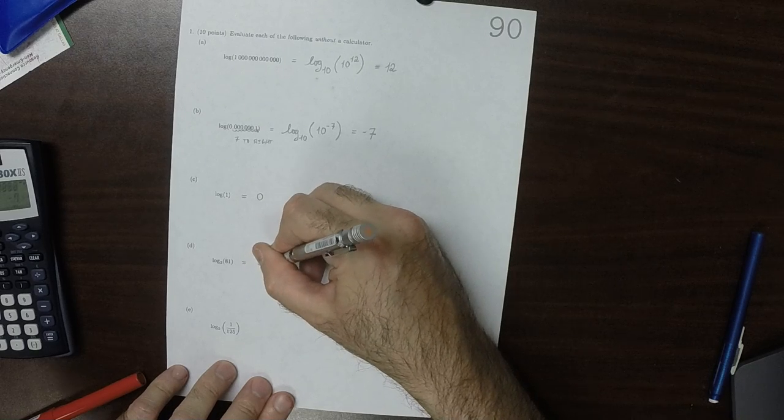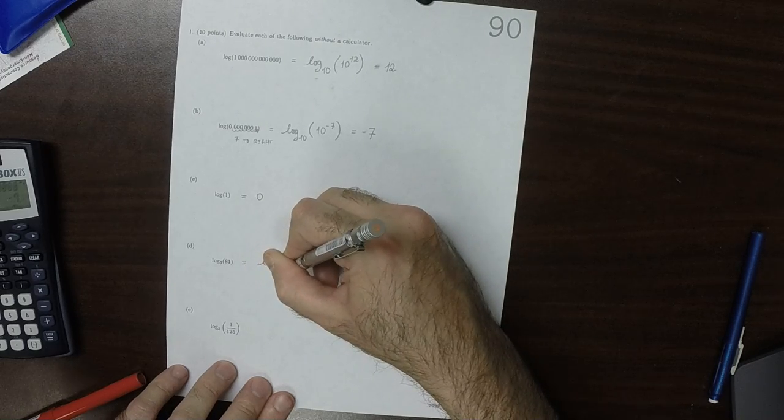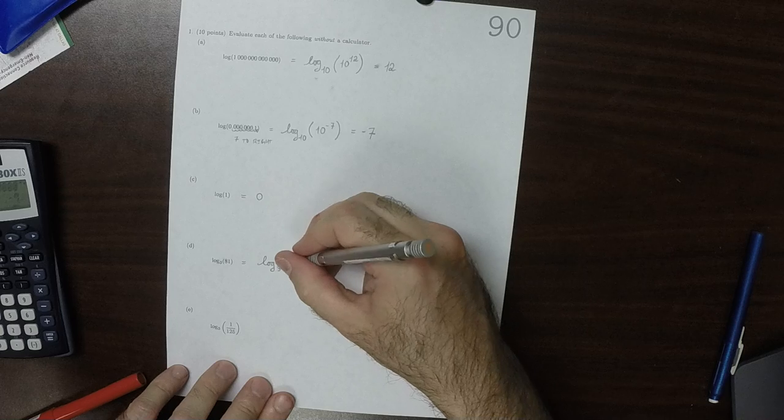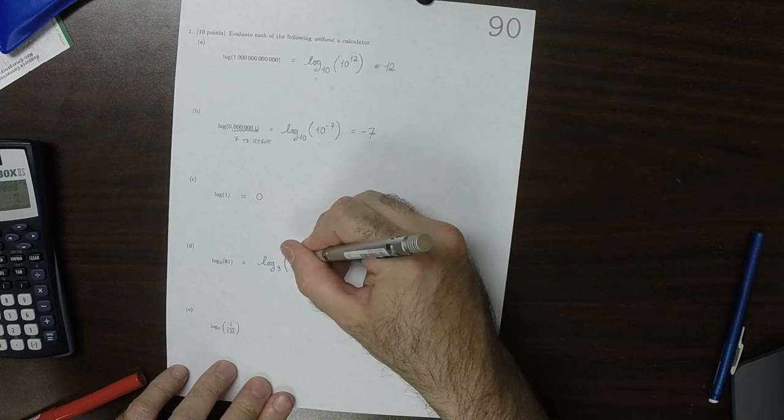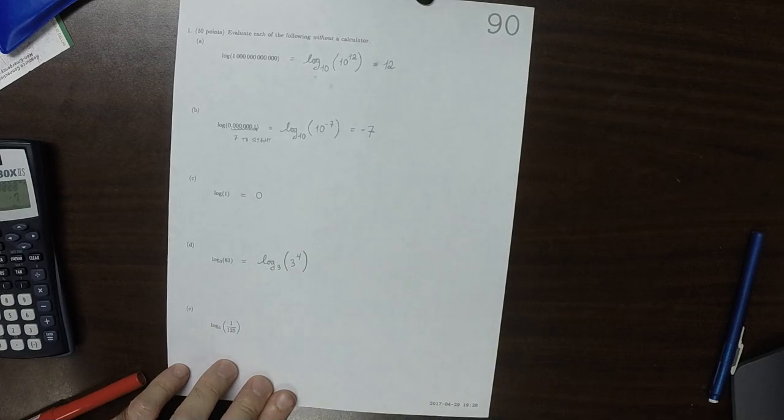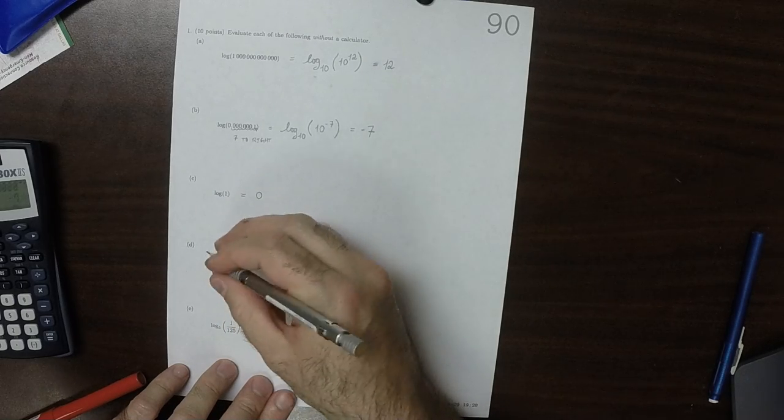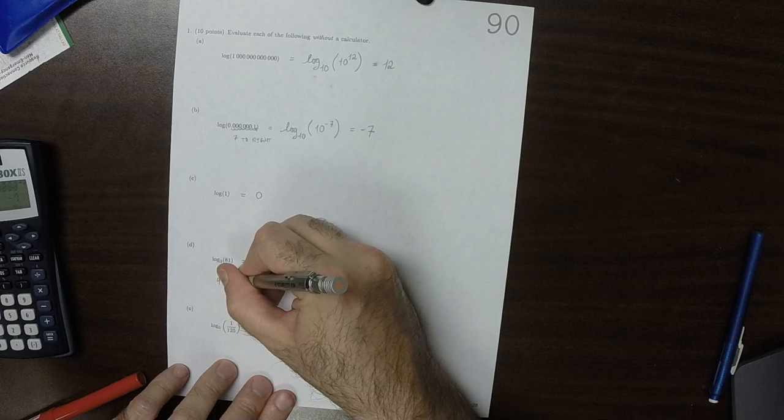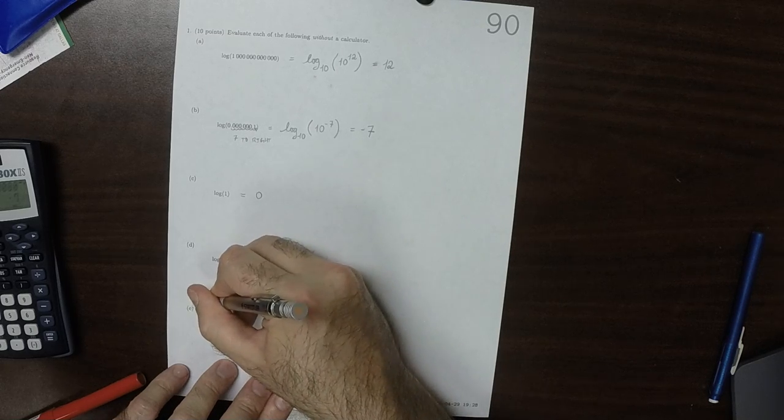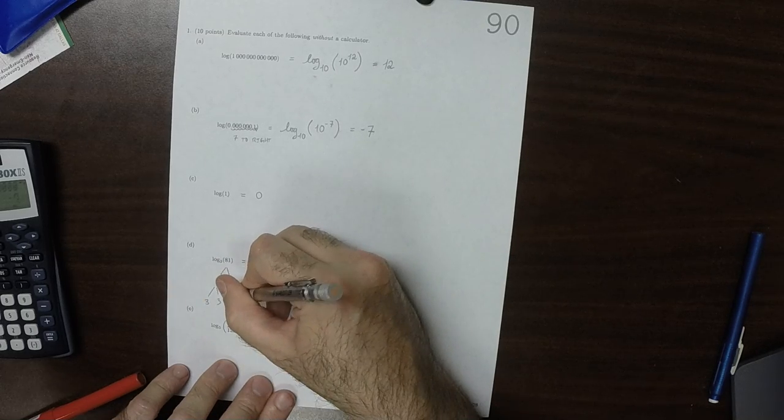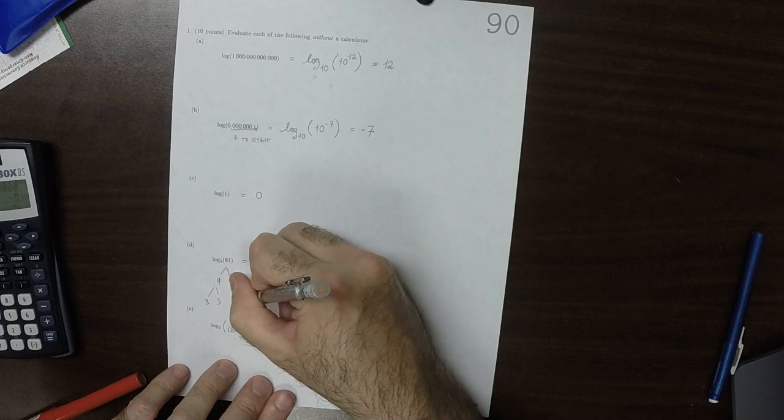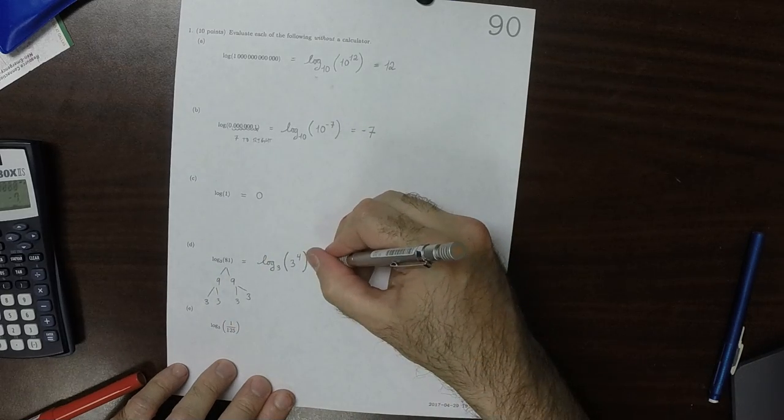This is log base 3 of 81, which can be written as 3 to the 4, because you can think of it like 9 times 9, and then each of those is 3 and 3 and 3 and 3. So that's 3 to the 4, so the answer is 4.